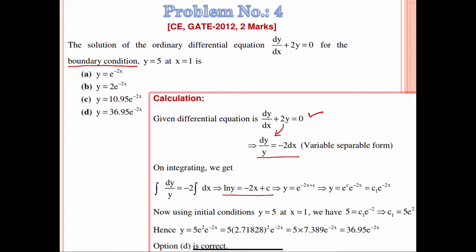This means y = e^(−2x + c), which can be written as e^c · e^(−2x). Since e^c is a constant, y = c₁ e^(−2x). Using the boundary condition at x = 1, y = 5, we can evaluate c₁.